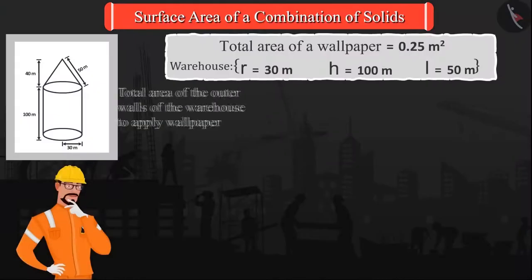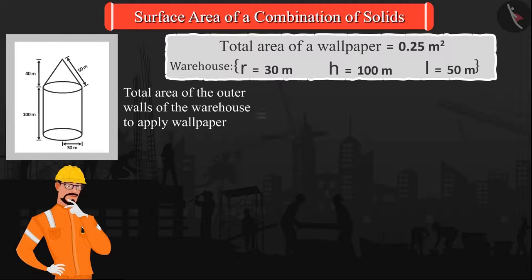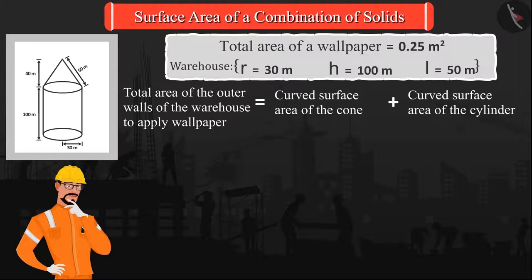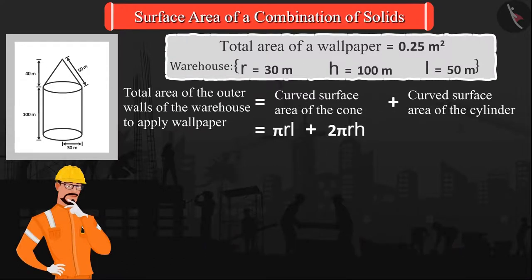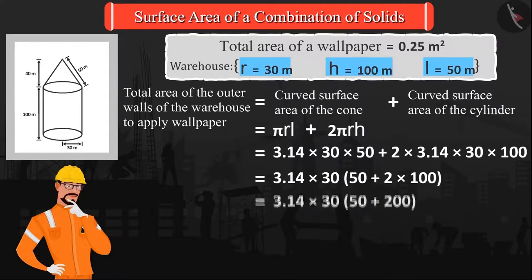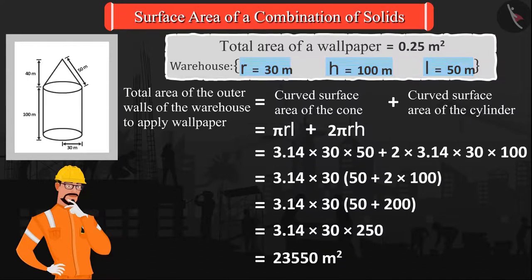Now to apply the wallpaper, let us find the total area of the outer walls of the warehouse, which is equal to the curved surface area of the cone plus the curved surface area of the cylinder. After substituting all the values, we get that the total area of the outer walls on which the wallpaper is to be applied is 23,550 square meters.